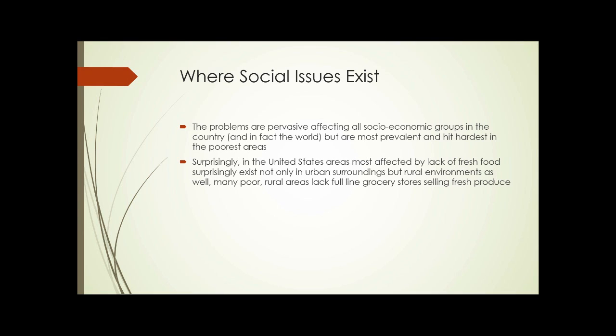So where do these social issues exist? The problems are pervasive and affect all socioeconomic groups in the country — and really in the world — but they are most prevalent and hit hardest in the poorest areas. Surprisingly, in the United States, areas most affected by lack of fresh food exist not only in urban surroundings but rural environments as well. Many poor rural areas lack full-line grocery stores selling fresh produce.